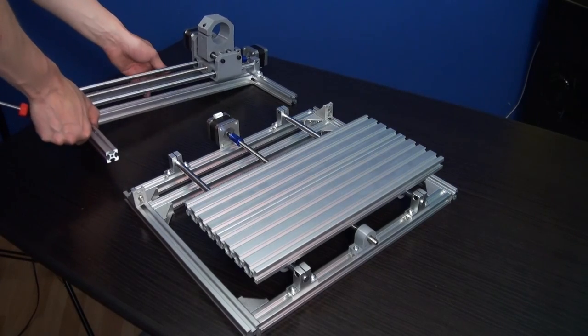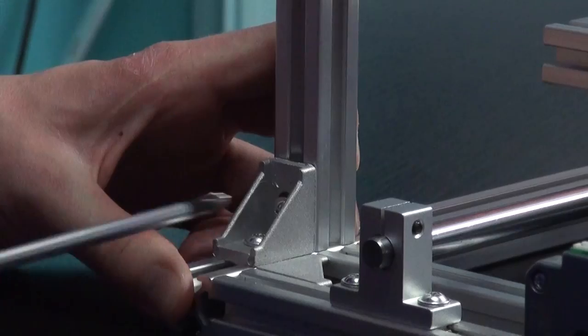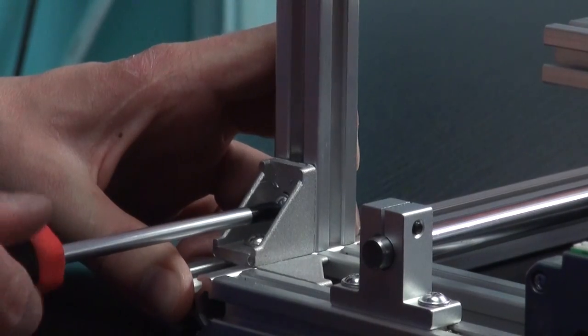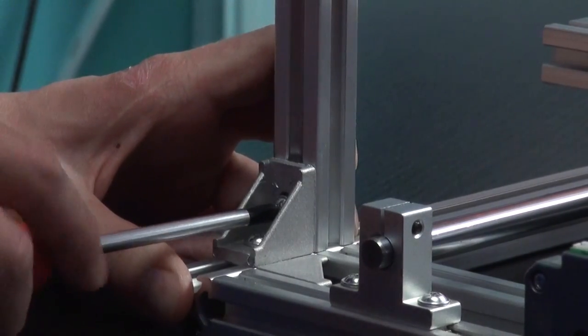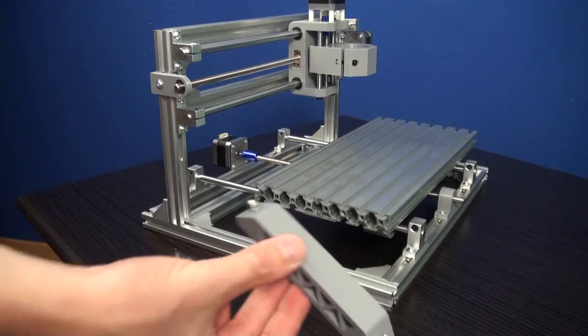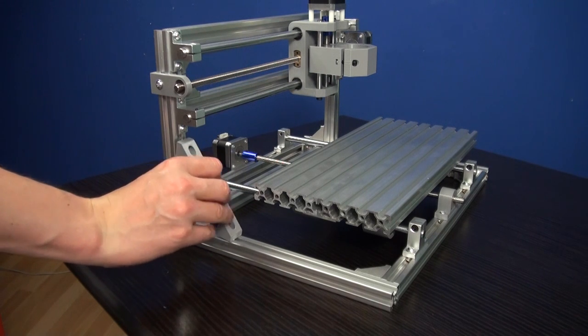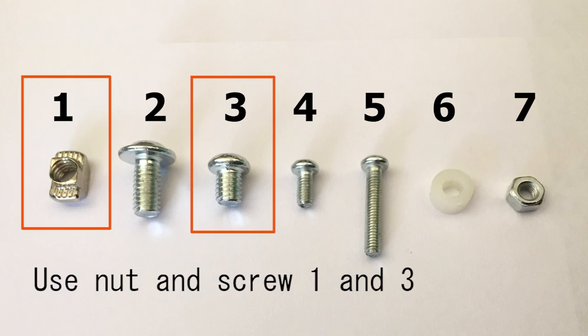The two frames can now be joined together. Because we already installed the corner brackets in the correct place we only have to fasten the two top screws from the brackets. The 3D printed supports can now be installed. Use the T-nuts with the number three screws.